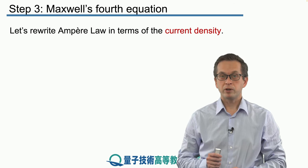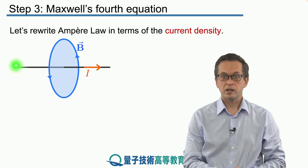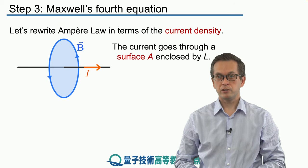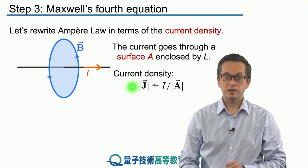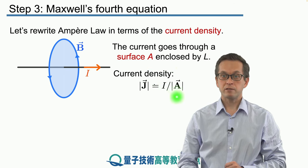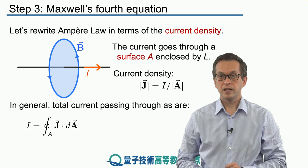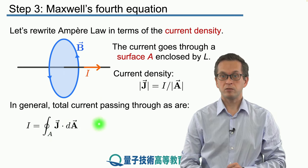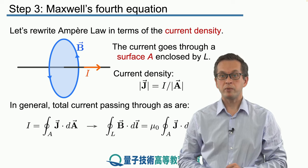What we're going to do is take Ampere's law and rewrite it in terms of the current density. We are considering the current going through the surface whose boundary is our initial loop — that is, the current going through surface A enclosed by our loop L. This allows us to define the current density. The magnitude of the current density is given by the current passing through the area A. That way, the total current is simply given by the surface integral of the current density with respect to some small area dA, which allows us to rewrite Ampere's law as follows.